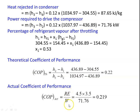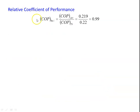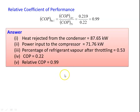Actual COP = refrigeration effect / power input to compressor = (4.5 × 3.5) / 71.76 = 0.219. Relative COP = actual COP / theoretical COP = 0.219 / 0.22 = 0.99. Answers: heat rejected from condenser = 87.65 kW, power input to compressor = 71.76 kW, percentage of refrigerant vapor after throttling = 53%, theoretical COP = 0.22, relative COP = 0.99.